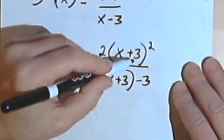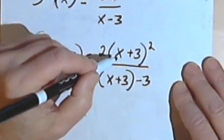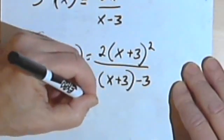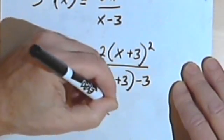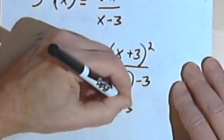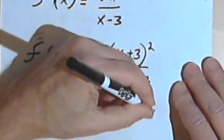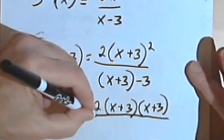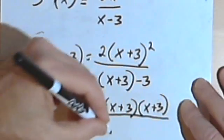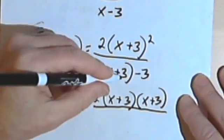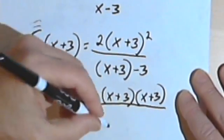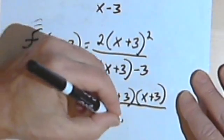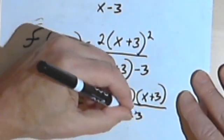So you know that x plus 3 squared means it's x plus 3 times x plus 3. So I'm going to have 2 times x plus 3 over x plus 3. I'm sorry, 2 times x plus 3 times x plus 3 over, let's see, x plus 3, I don't need these parentheses in the denominator anymore, x plus 3 minus 3.